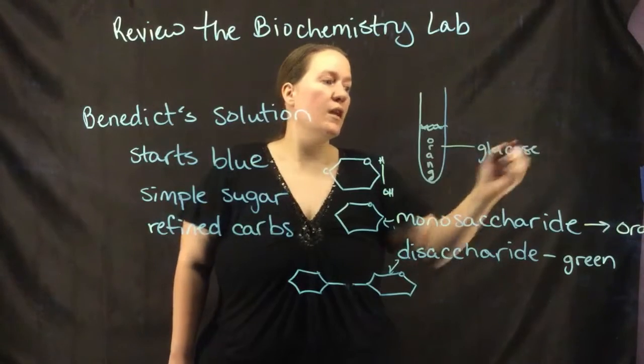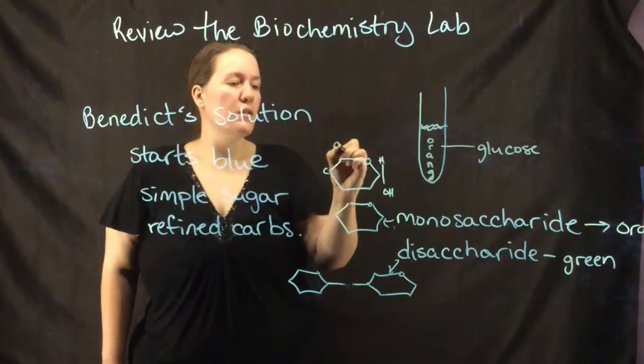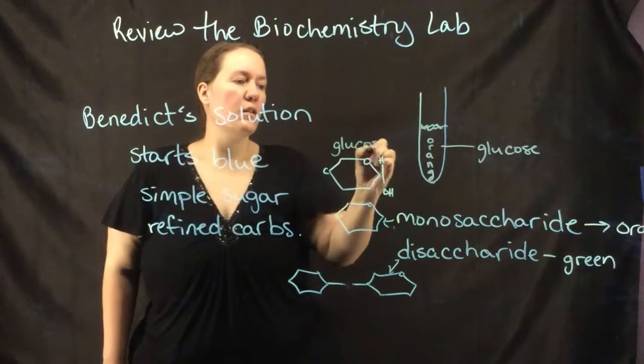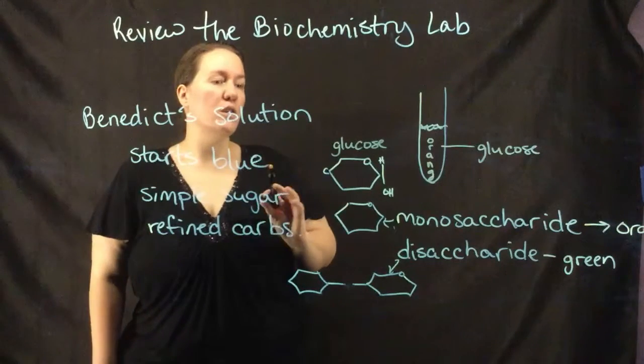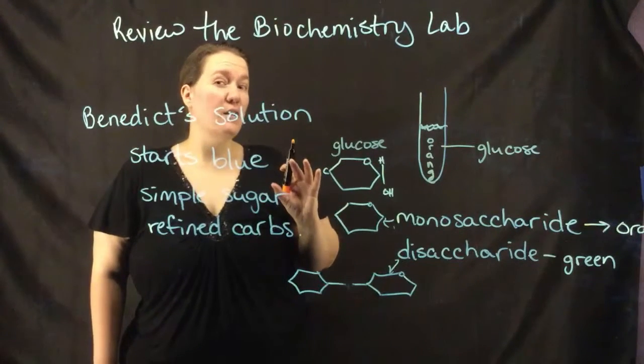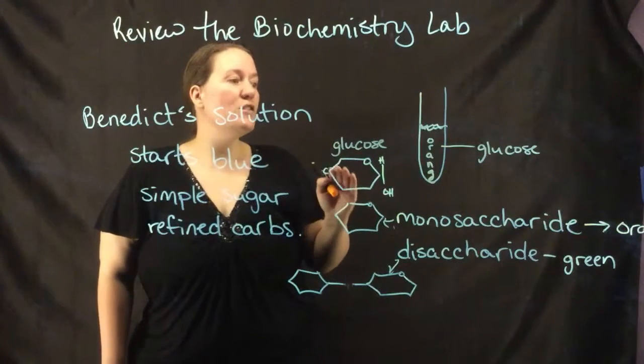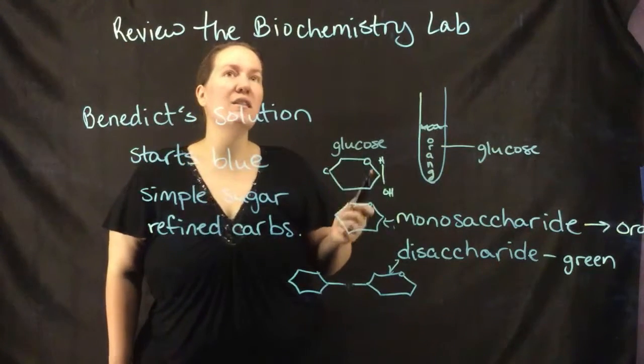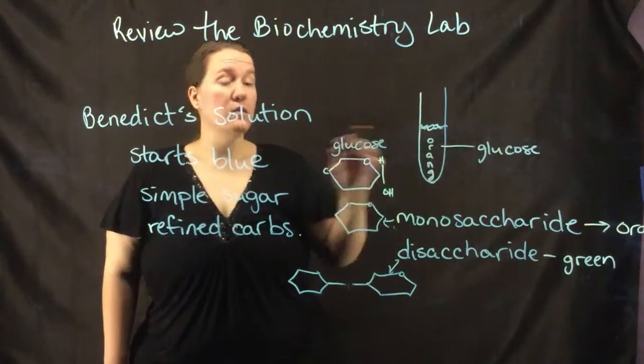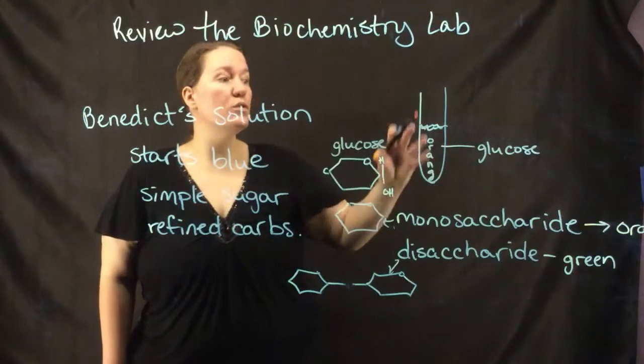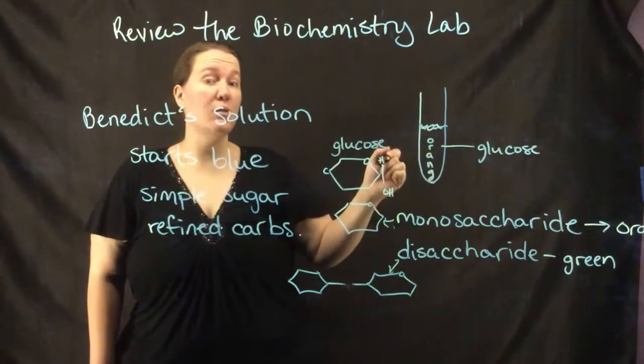When you tested glucose, you put it directly into the test tube and then you put the Benedict solution in. The reason you did that was not to test if glucose is sugar, it's actually to show you what a positive test looks like. So that's our positive control.